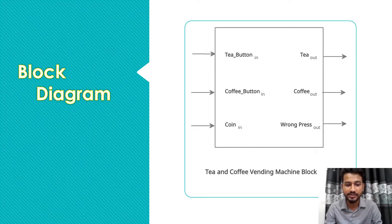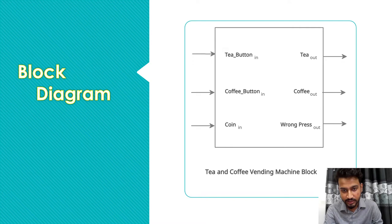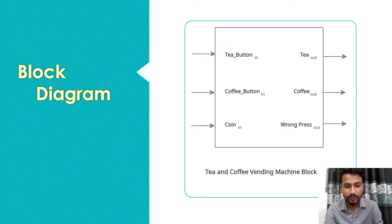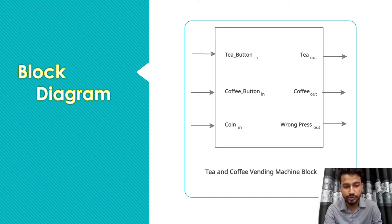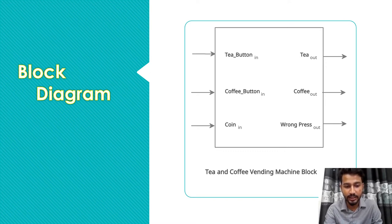Here we can see the block diagram for the working principle of the circuit of a tea and coffee vending machine. In this diagram, there are three inputs: the tea button, coffee button, and coin input. There are also three outputs based on the three input choices: tea, coffee, and wrong press. But only one output will be selected according to the given inputs.